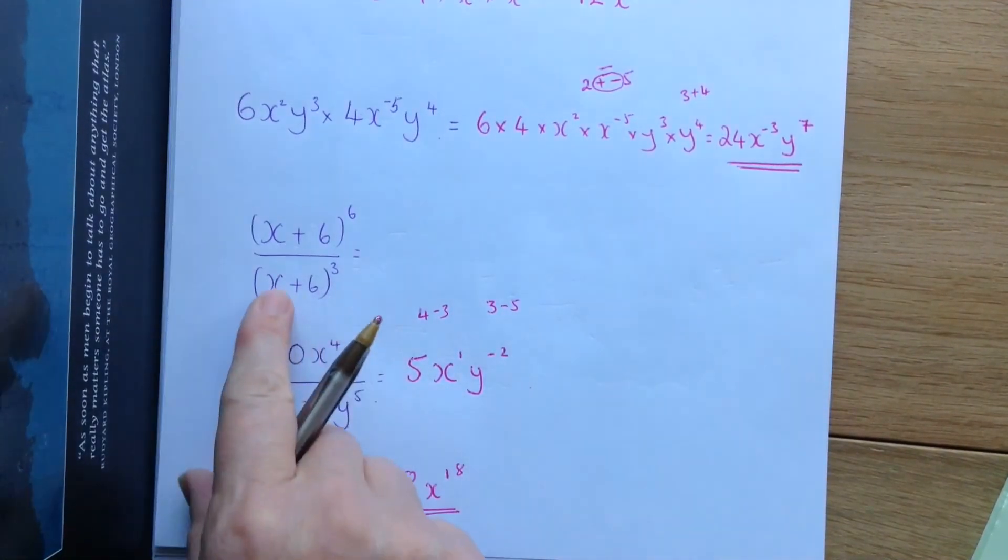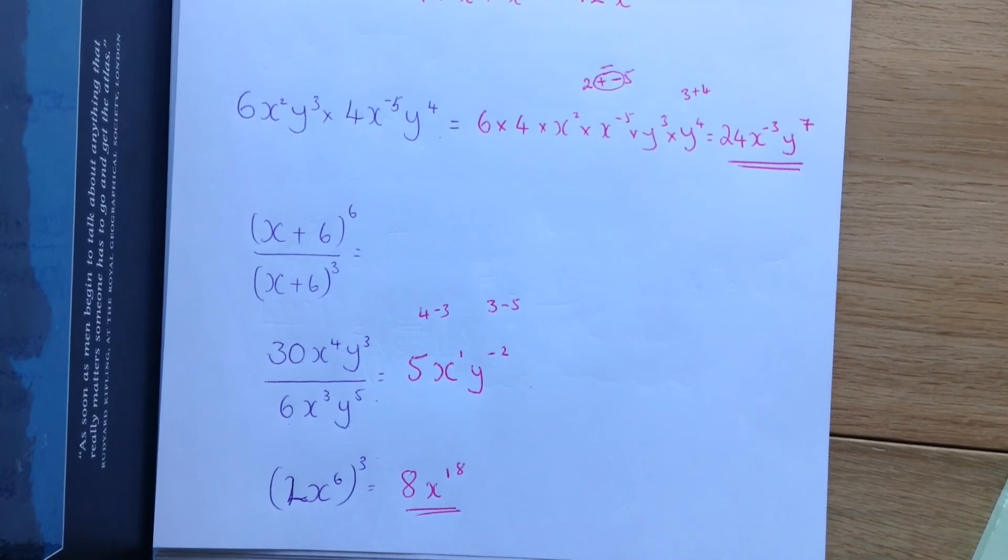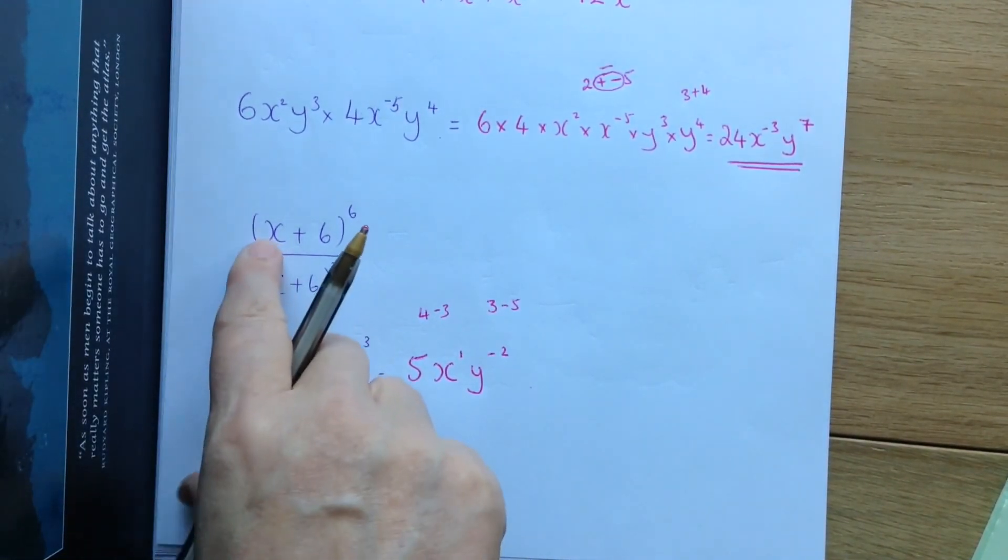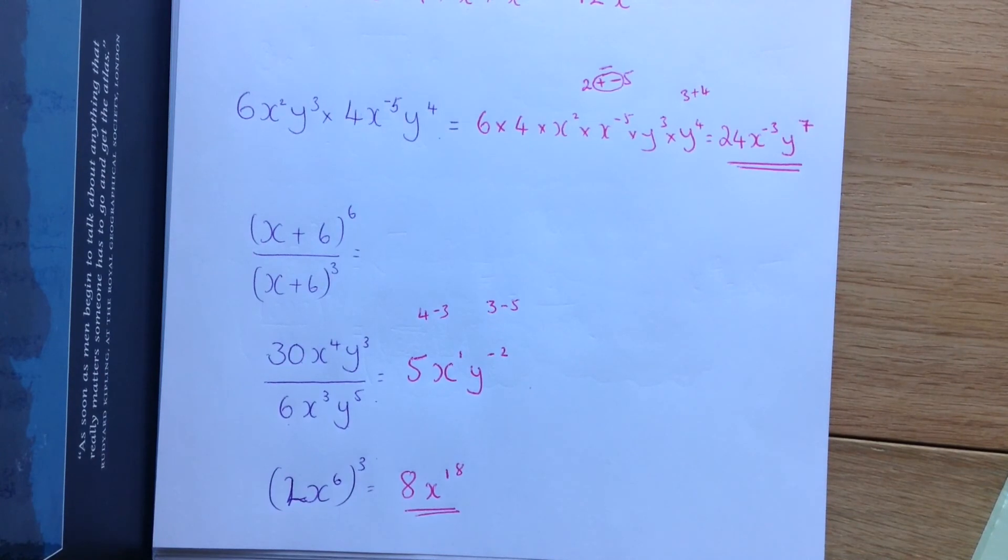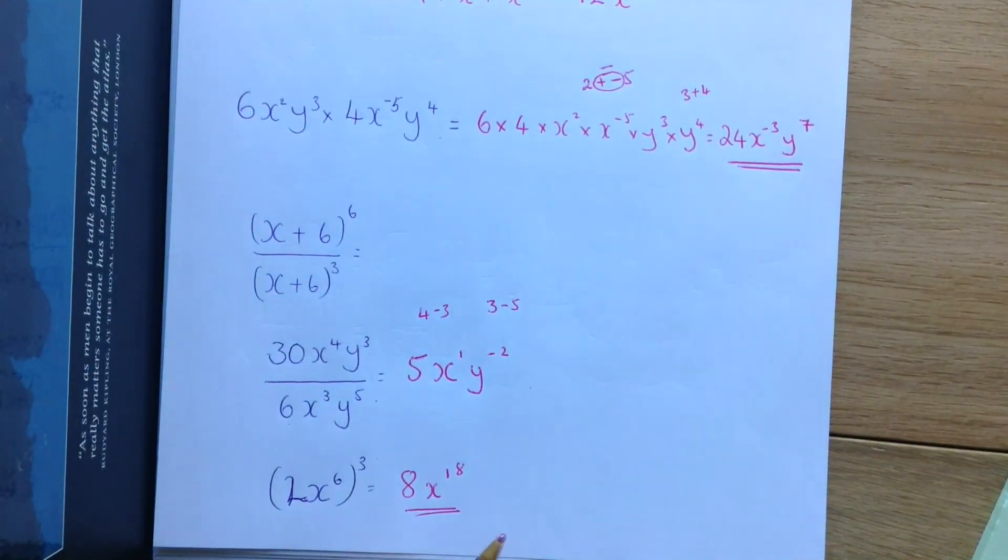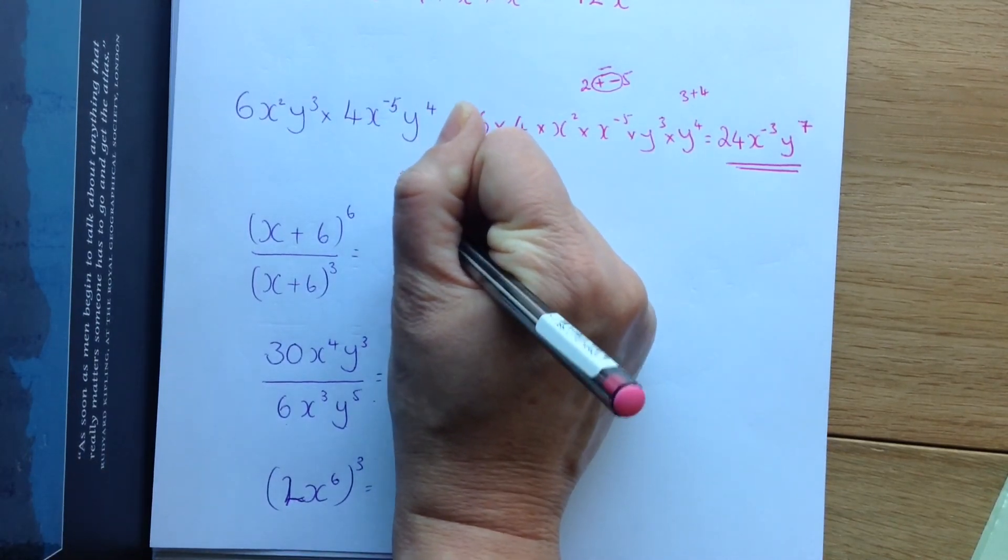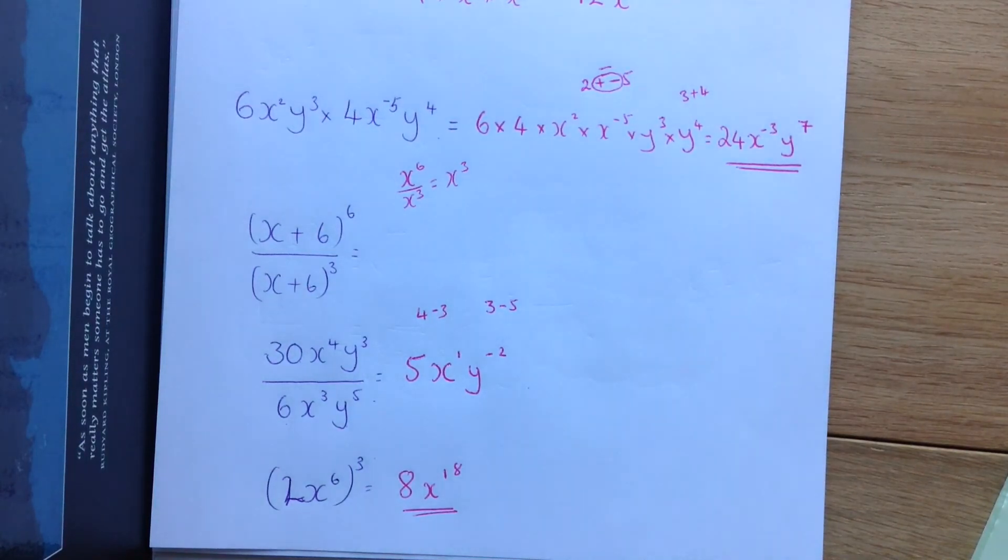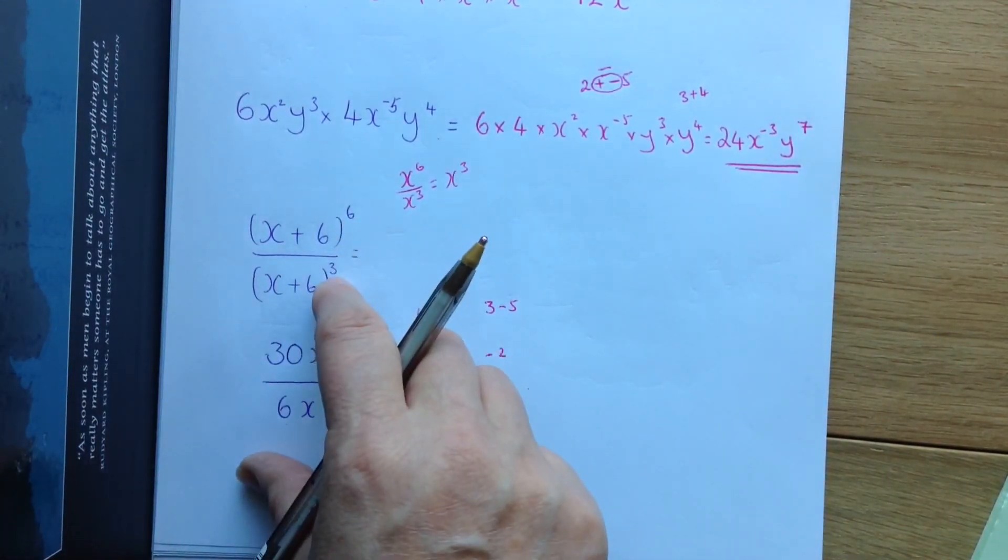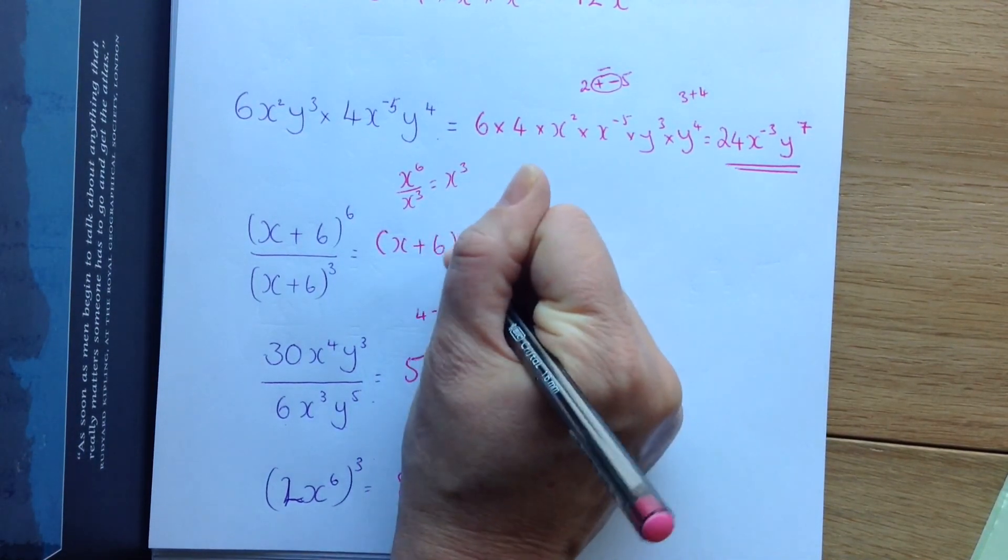I am just going to show you this one because they often put this one on and it tricks people. What you need to do is recognize that this bracket is exactly the same as this bracket. So, we can treat it as a single letter really. So, if it had been x to the 6 divided by x to the 3, we know that would be x to the 3 because we just take the powers away. And we can do exactly the same thing with this. 6 take away 3 is 3. So, the answer is x plus 6 to the power of 3.